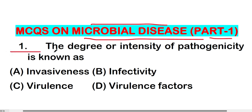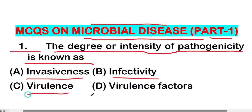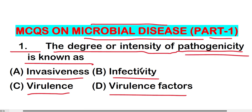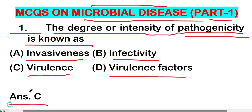The first question: the degree or intensity of pathogenicity is known as — option A: invasiveness, option B: infectivity, option C: virulence, option D: virulence factors. The right answer is option C, virulence. Virulence is known as the degree or intensity of pathogenicity.